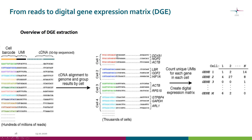We also use the UMIs to resolve specific situations. For example, if we have two reads mapping to the ACTP gene, we need to know whether they represent two transcripts or only one. If the UMI is the same for both reads, they came from the same transcript molecule, so we count it only once. In another example for the ARL1 gene, if the UMIs are different, the two reads came from two separate transcript molecules, so we mark two counts for that gene.